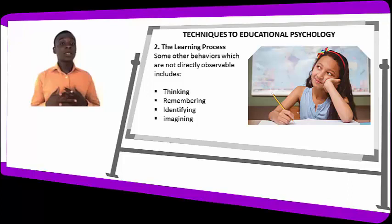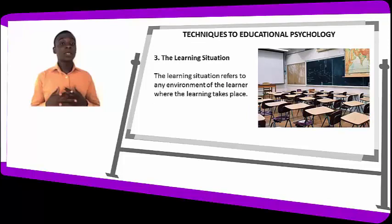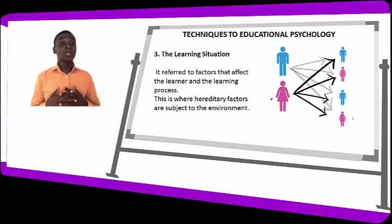Number three is the learning situation. The learning situation refers to any environment of the learner where learning takes place, and to factors that affect the learner and the learning process. This is where hereditary factors are subject to the environment.